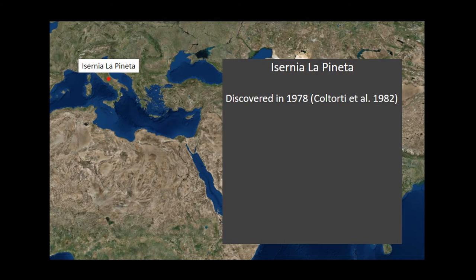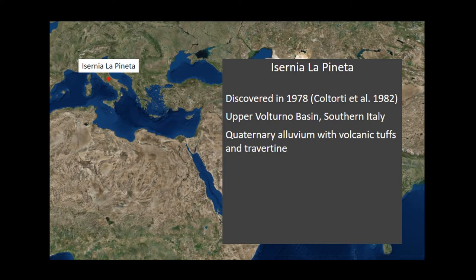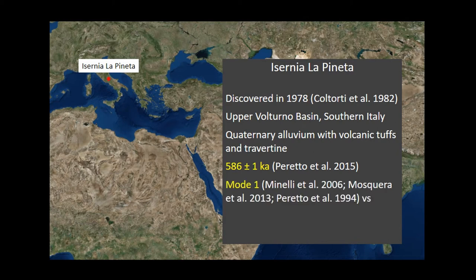With regards to Isernia, it was discovered in 1978 during the construction of the Napoli-Vasto Highway, identified as a paleontological site, and assigned the Isernia La Pineta faunal unit. It's located in the Upper Volturno Basin in quaternary alluviums with intercalated tuffs and travertines as bedrock. Recent dates place Unit 3, the archaeological layer, at around 586,000 years. Those applying a morphological or typological approach assigned a Mode 1 classification due to the absence of LCTs and low incidences of retouched flake tools, but using technological and chaîne opératoire analysis as well as behavioural traits, other workers have called it a Mode 2 assemblage.